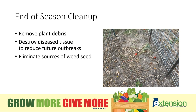The last tip is to do your end of season cleanup. It's important to revisit the garden at the end of the season to make sure everything is cleaned out. It's essential to go in there and remove diseased plant residue to reduce future outbreaks. After pulling out the tomatoes, you can still see tomato leaves, fruit, and pieces of stem laying on the ground. I'd go in there with a rake and rake all that material out and remove it, hoping to reduce the chance of having disease the next year. Plus, I'd also pull any weeds to remove sources of weed seed.